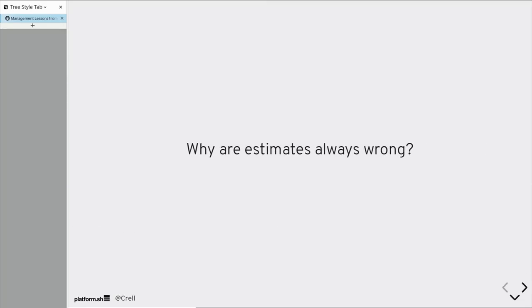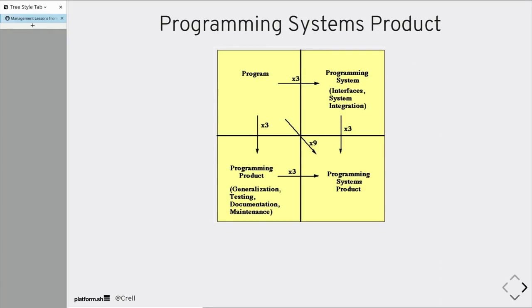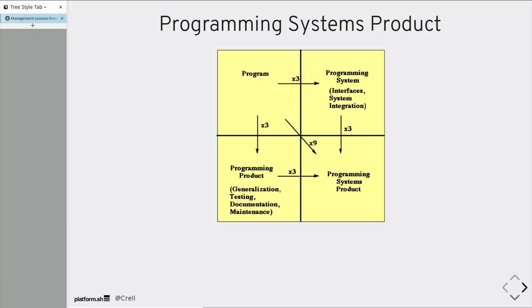Point two. Why are your estimates always wrong? There's a lot of reasons. Brooks argues it's because you're estimating the wrong thing. When you make an estimate, as a developer, you're estimating the time it takes to write a program. This is not useful.